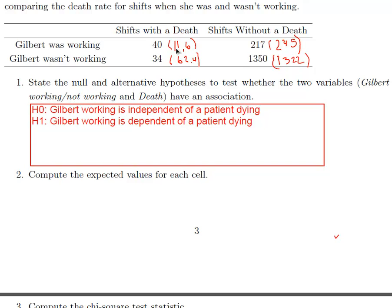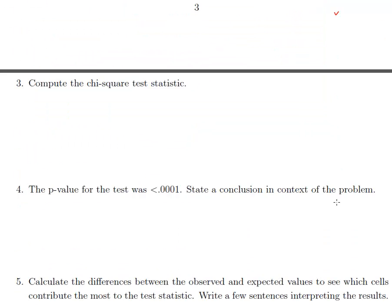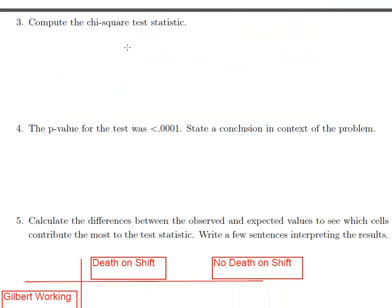And then down here was 62.4. And then over here, our expected was 245. So 245. And the last expected value was 1,322. So those are all in parentheses there. Okay. So we can look at this. We're going to do that on the next page. But we can see that more people died than expected when Gilbert was working. And then less people, there are less people that died than expected when Gilbert wasn't working. So it's not looking good for Gilbert.